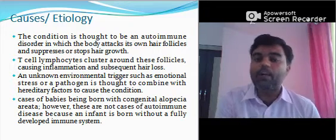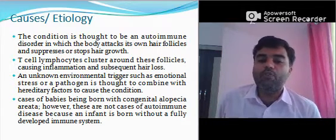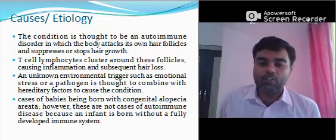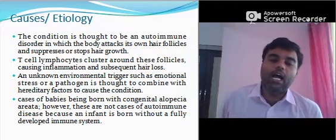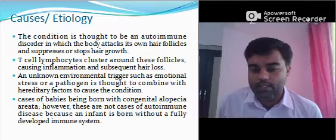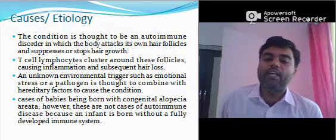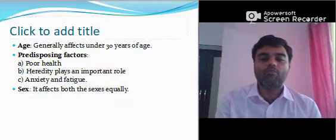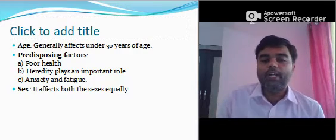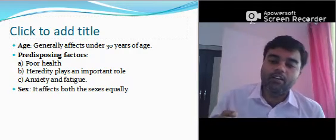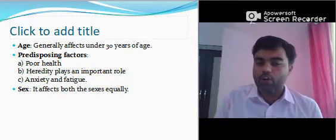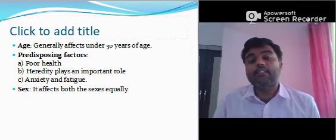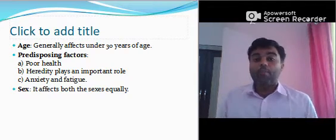It is not proven, but mostly in alopecia there are chances of emotional stress, pathogen, or it may be hereditary. Cases of babies being born with congenital alopecia exist; however, these are not cases of autoimmune disease because an infant is born without a fully developed immune system. Age: it mostly affects those under 30 years of age. Predisposing factors — what increases the chances of this condition — include poor health, hereditary factors, and most importantly nowadays, anxiety and fatigue.